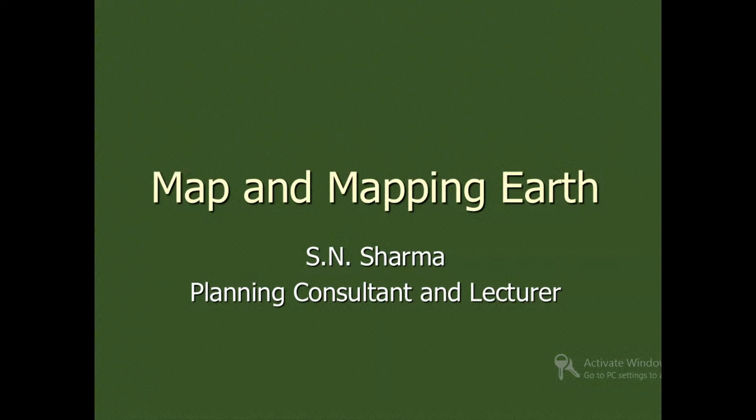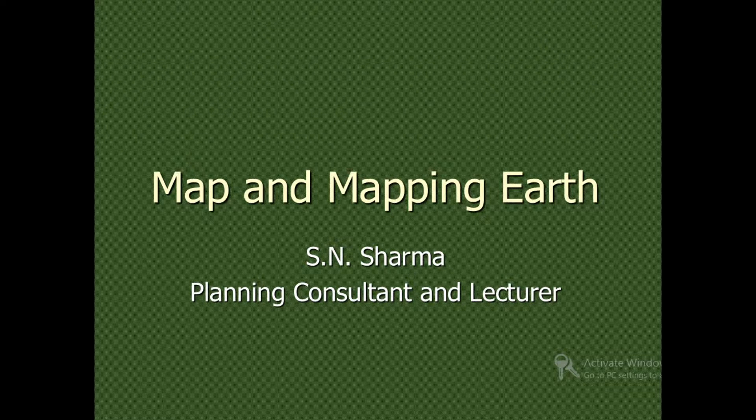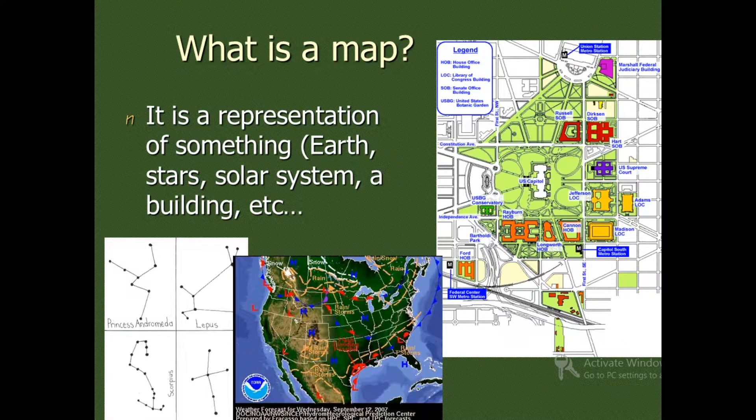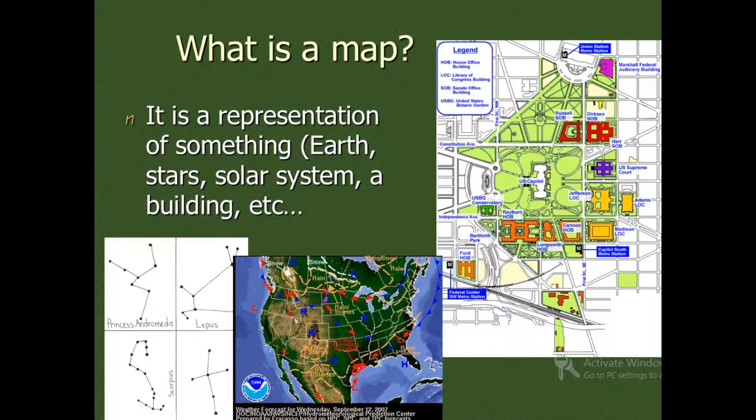Today we're going to discuss map-making and mapping of the Earth. So what is a map? A map is a representation of something—features of the Earth, stars, solar system, any building, anything on a smaller scale.